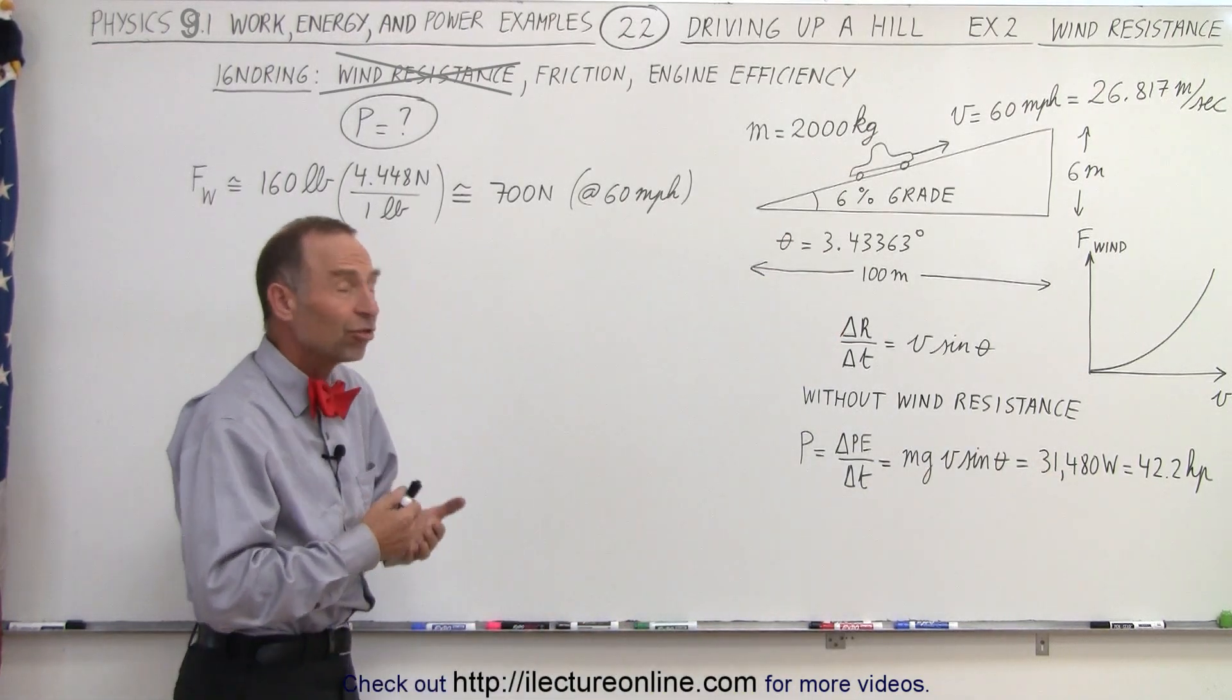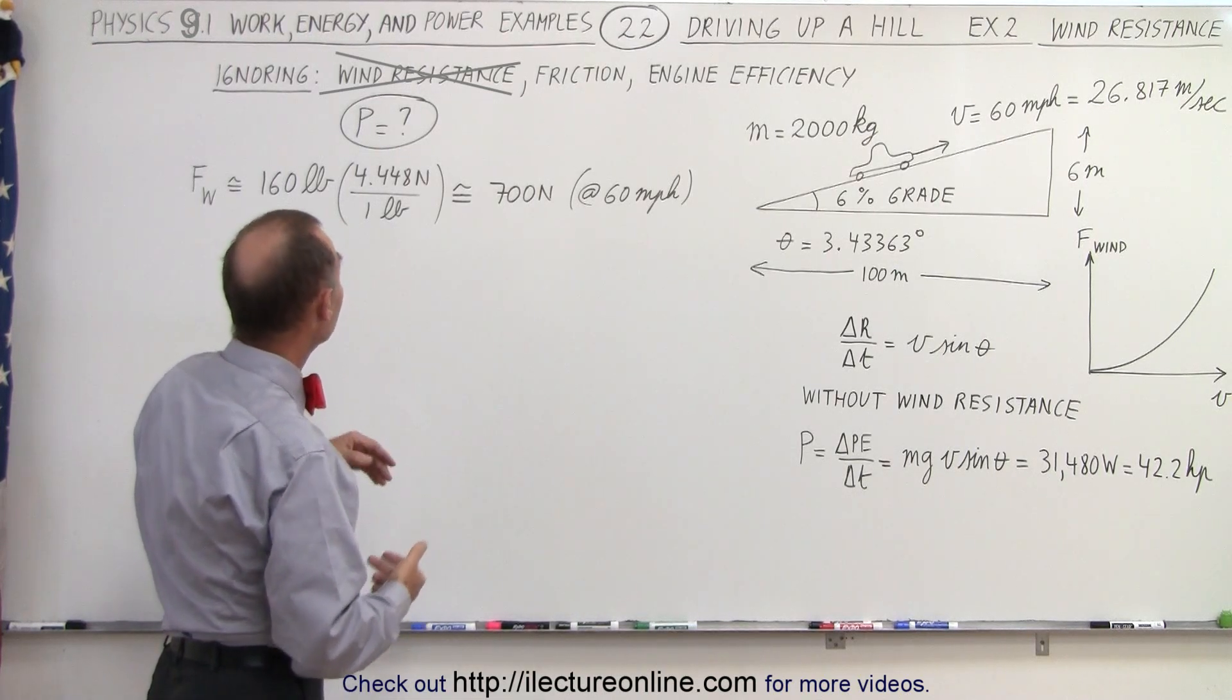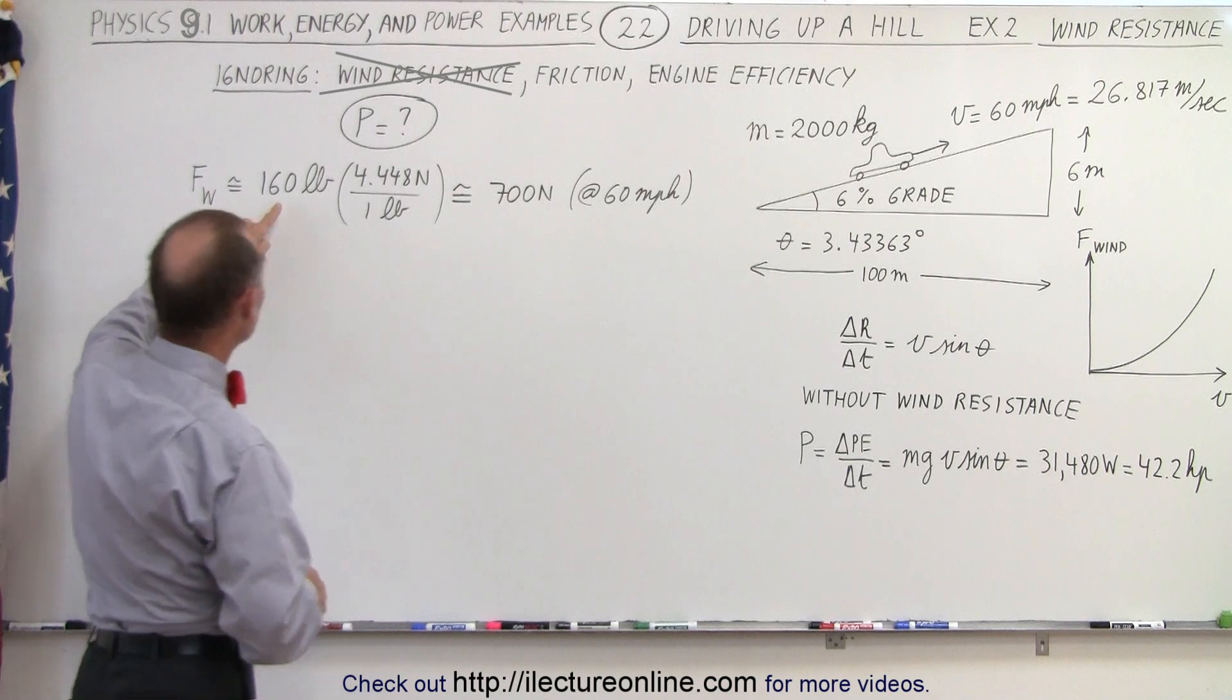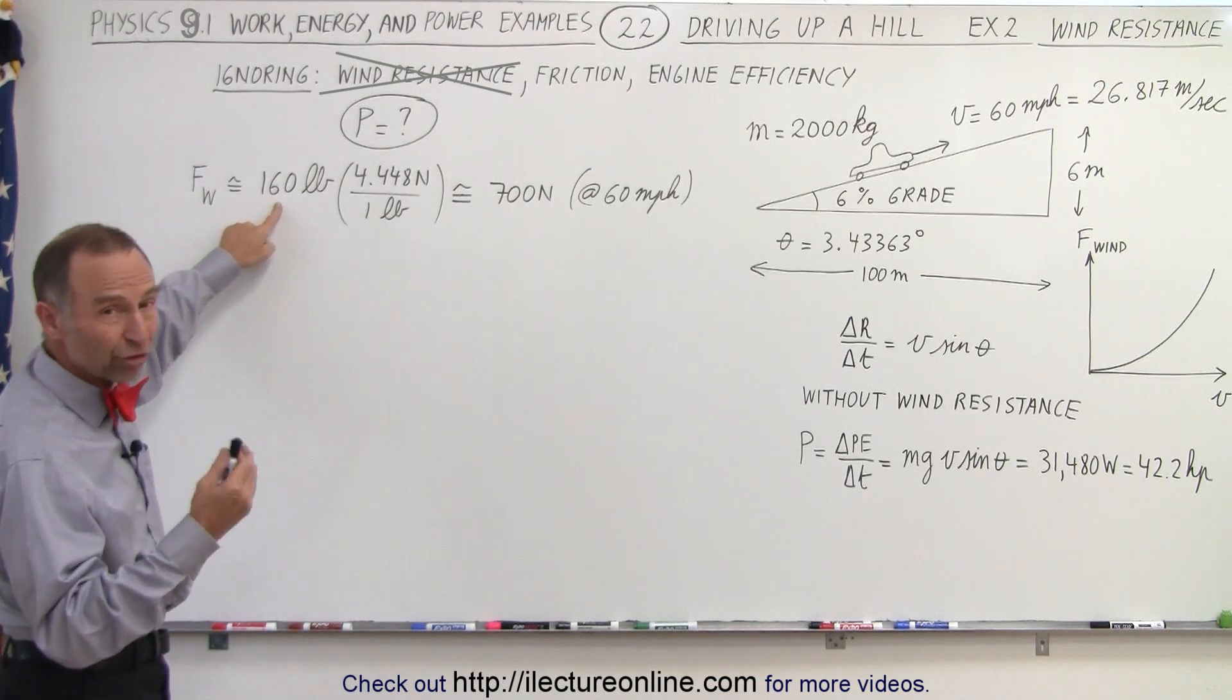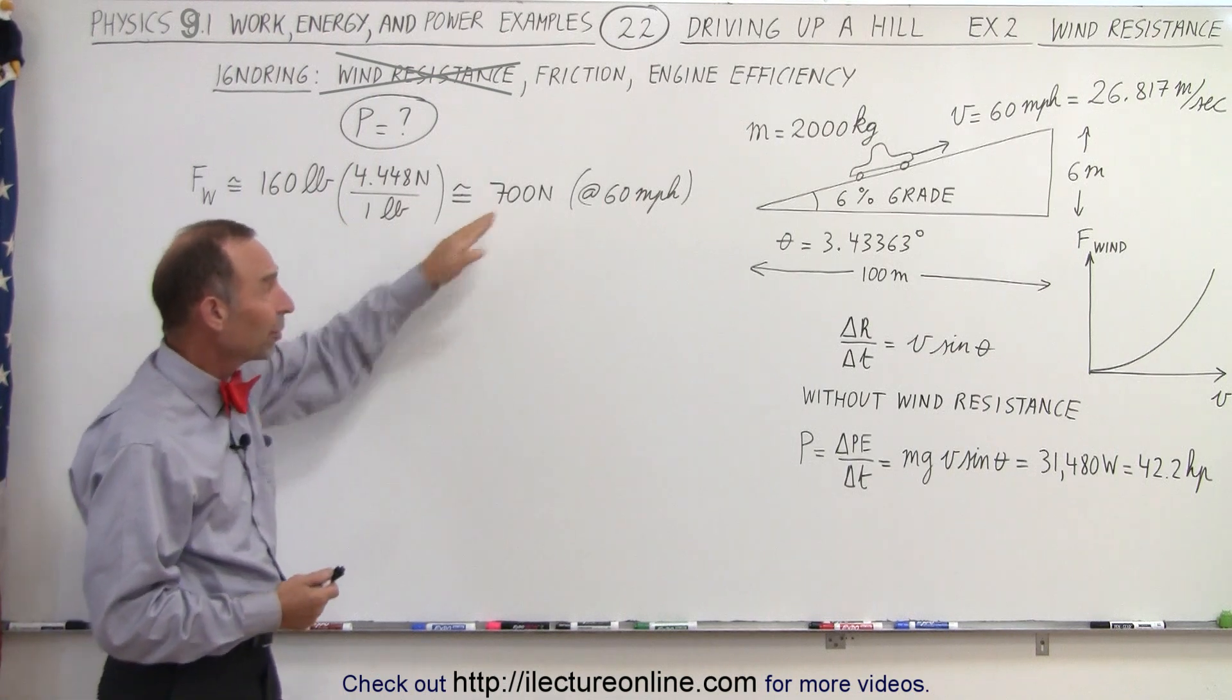But now, how much additional power would you need to overcome the wind resistance? Typically, at a speed of about 60 miles an hour, that wind resistance produces a retarding force of about 160 pounds, which is about 700 newtons.